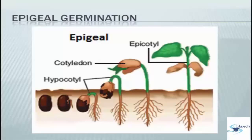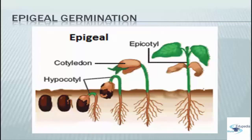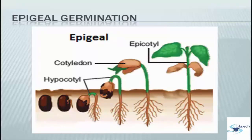In the image, we can see epigeal germination, with the cotyledons and hypocotyl visible above the ground as part of the germination process. To recap: in hypogeal germination, the process occurs below the soil. Thank you for listening — this is Ethopedia World.